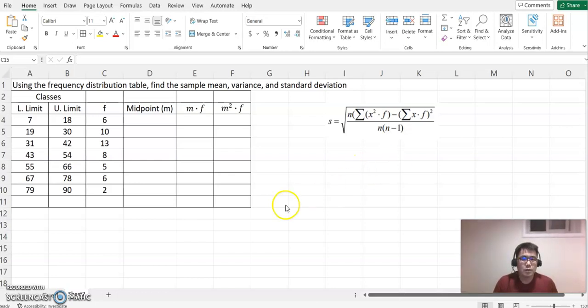Creating a frequency table means we don't know the actual data set anymore. We know that the class between 7 through 18 has six different data points, and 10 data points belong to 19 through 30, and 13 data belong to 31 through 42, but we don't know the actual data set.